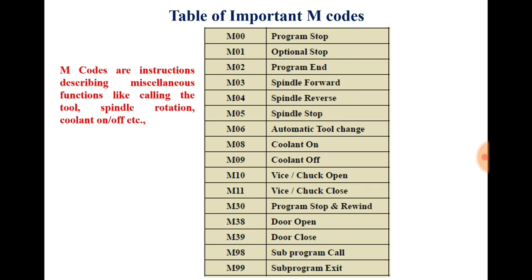With M00 you can stop the program. The next code is M01 — optional stop. There is a difference between program stop and optional stop. With M00 you can stop your program at that instant, whereas with M01 you can stop your program optionally. Suppose after completion of one operation you want to measure the dimension of the workpiece — that time you can use M01, that is optional stop.